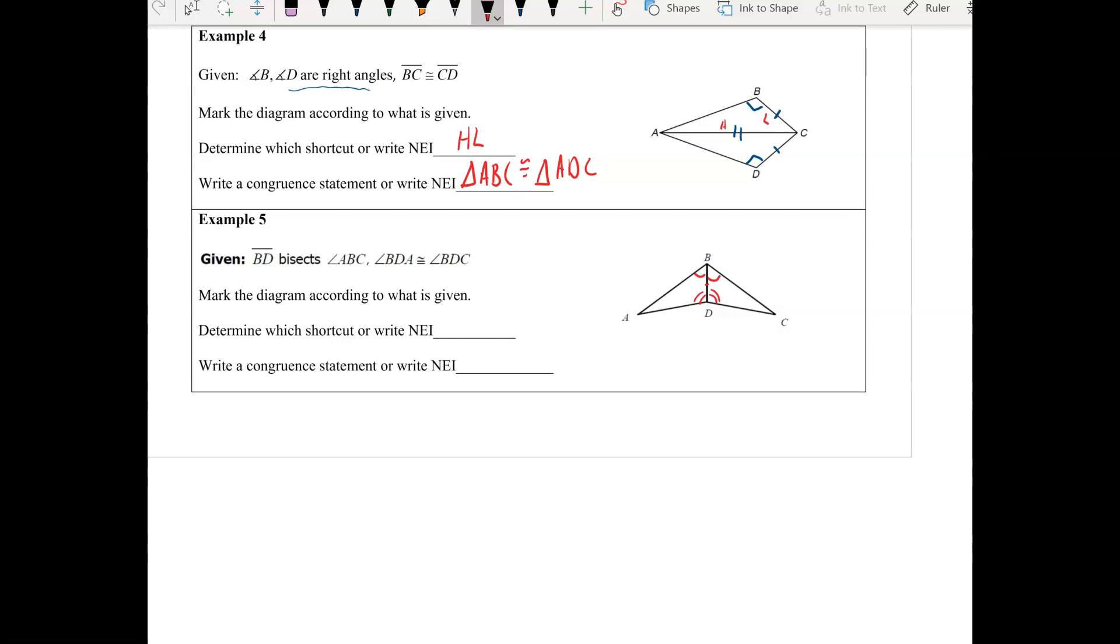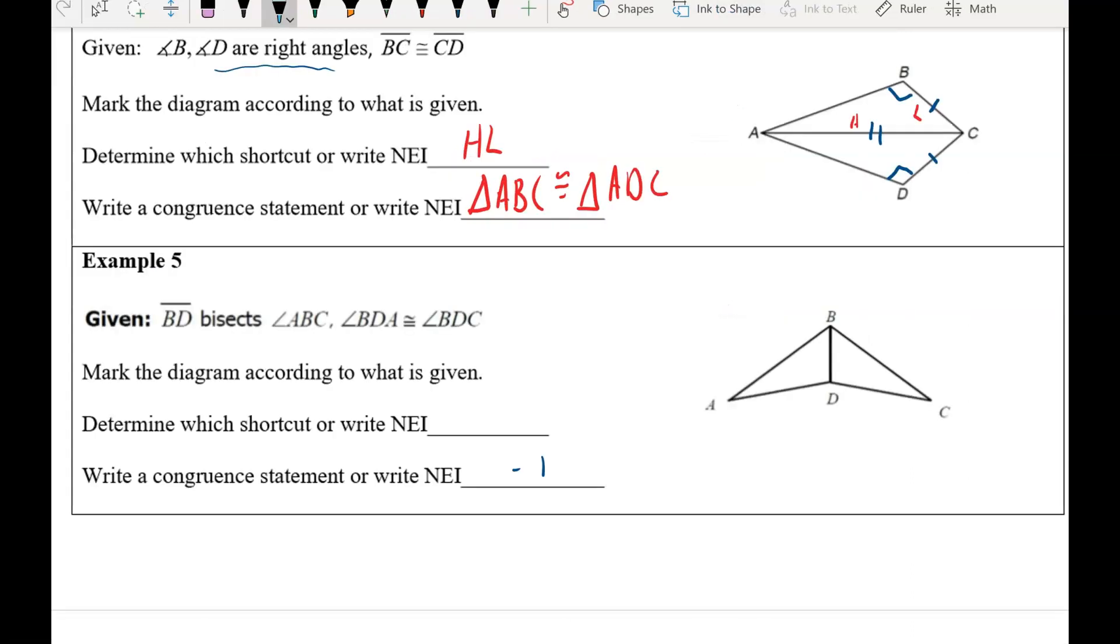Let's try the last example, so pause the video. So segment BC bisects angle ABC, making these two angles here congruent. Angle BDA, BDA down here, is congruent to angle BDC, which is also down here, and we have the same side, so we're looking at angle side angle here. So there's our shortcut, and our congruent statement would be triangle ABD is congruent to triangle CBD.